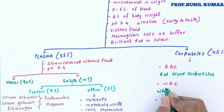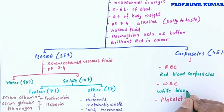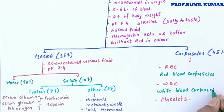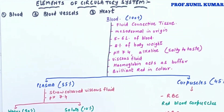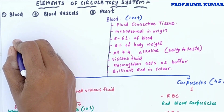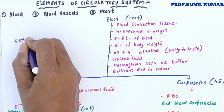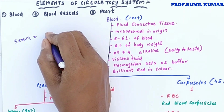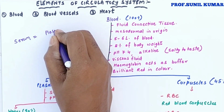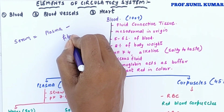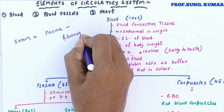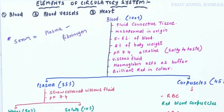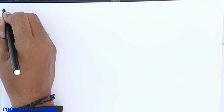Serum is nothing but plasma minus fibrinogen. So from the plasma, if you remove the plasma protein fibrinogen, you get serum.